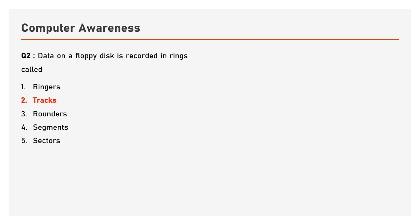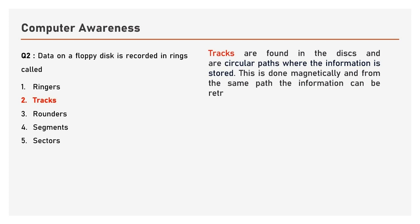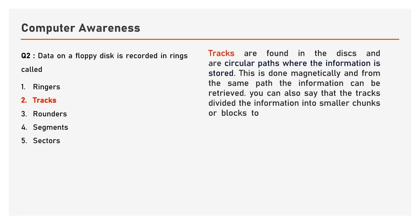Question number 2: Data on a floppy disk is recorded in rings called — options are Ringers, Tracks, Rounders, Segments, Sectors. The answer is Tracks. Tracks are found in disks and are circular paths where the information is stored. This is done magnetically, and from the same path the information can be retrieved. Tracks divide the information into smaller chunks or blocks to store information effectively.